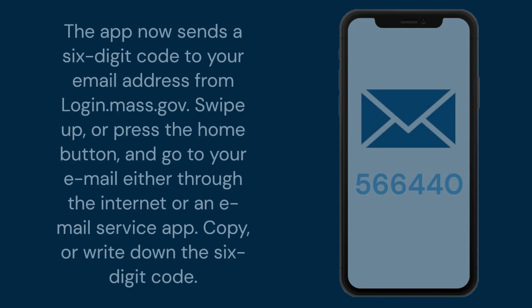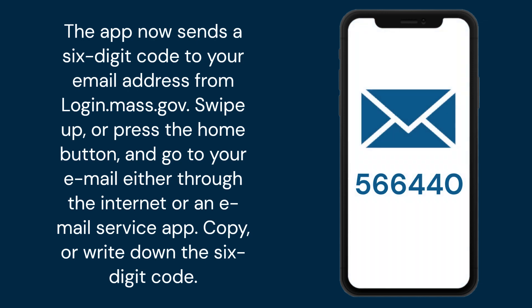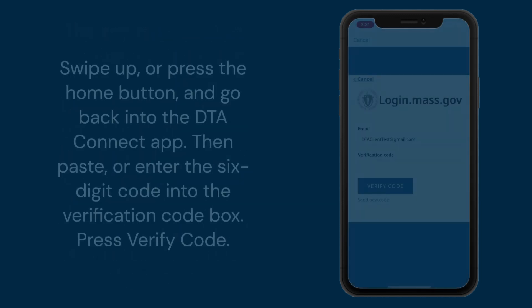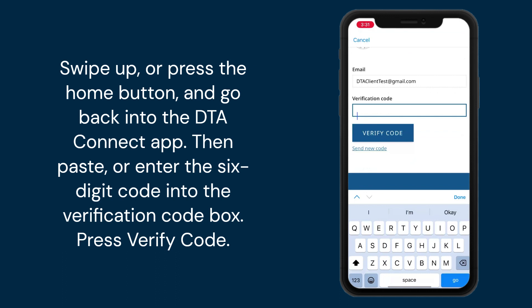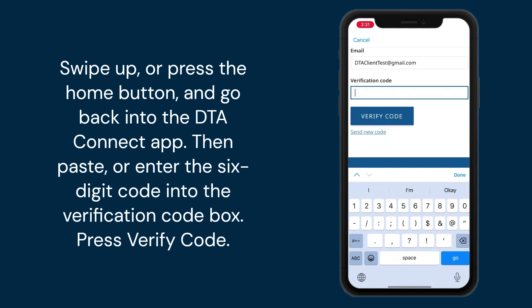The app now sends a six-digit code to your email address from login.mass.gov. Swipe up or press the home button and go to your email either through the internet or an email service app. Copy or write down the six-digit code. Then swipe up or press the home button, go back into the DTAConnect app, and paste or enter the six-digit code into the verification code box. Press verify code.